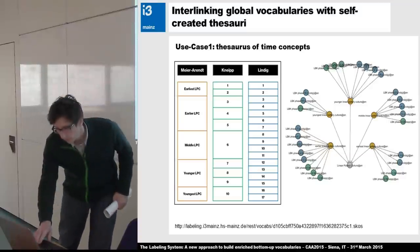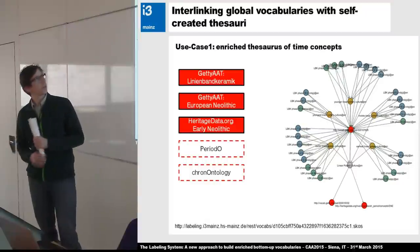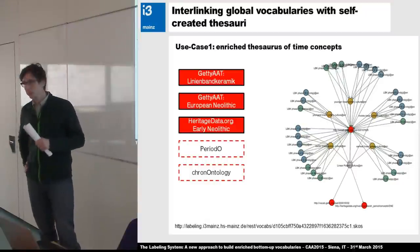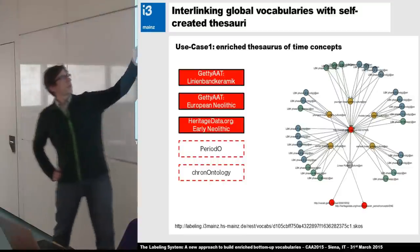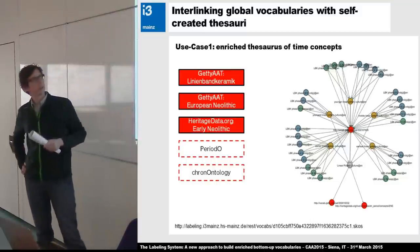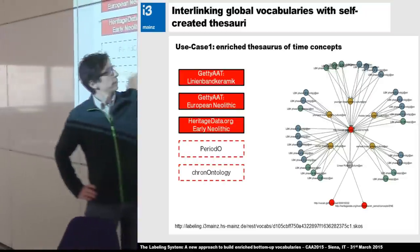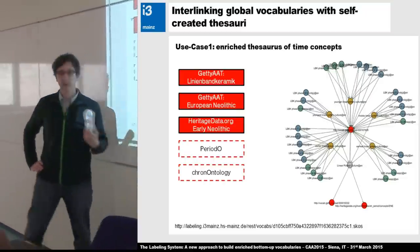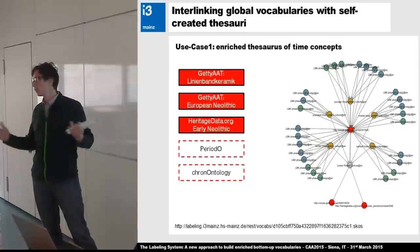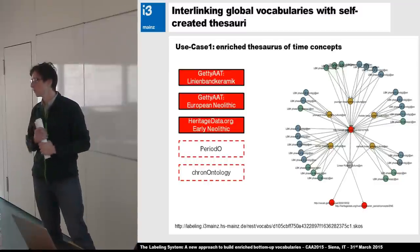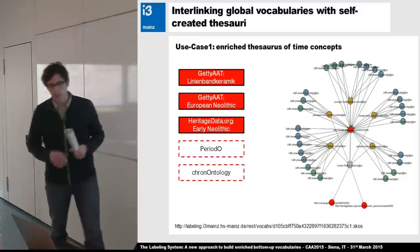One of the points the labeling system is capable of: I can now create relations to authoritative vocabularies — for example, the term 'linear pottery culture' in the Getty AAT — and define relations from each of my nodes to this term. This could be a narrower concept, broader concept, or whatever. You've seen the relations we currently implemented in the labeling system.